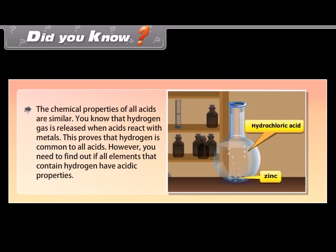Did you know? The chemical properties of all acids are similar. You know that hydrogen gas is released when acids react with metals. This proves that hydrogen is common to all acids. However, you need to find out if all elements that contain hydrogen have acidic properties.